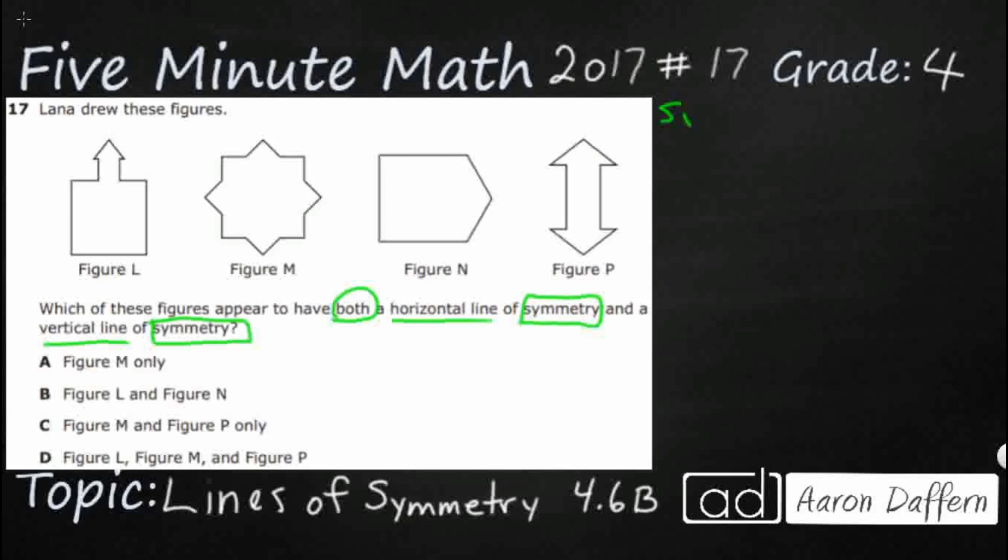So what is symmetry? When you have a line of symmetry, and we'll start with that line of symmetry term first, it is an imaginary line. So that's the first thing we need to see. There's not an actual line of symmetry. It's an imaginary line that, here's a term that we don't see much in fourth grade, but it's great for us to go ahead and be exposed to, bisects a figure.